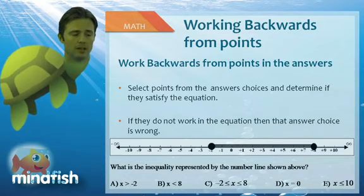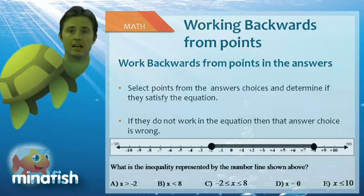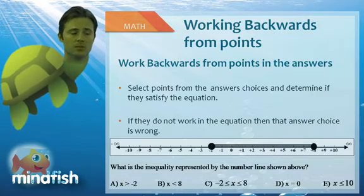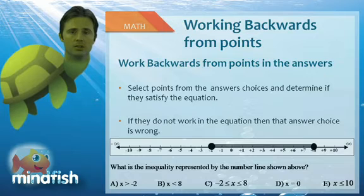The last thing we would look at here is the number 8, which is on our end. Now 8 is a true value, but if we put in 8 into choice B, it's not true. So B would go away as well, and that yields C.